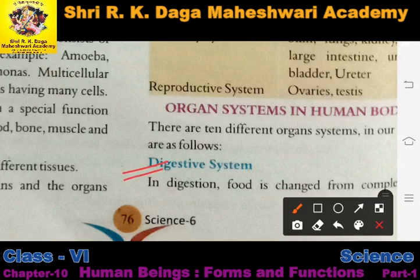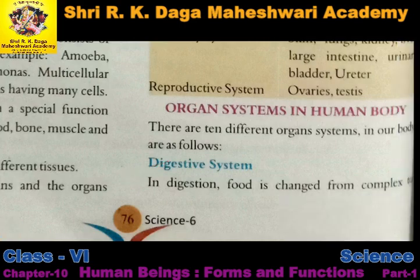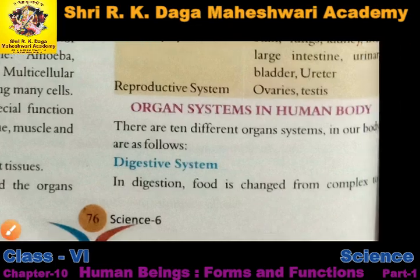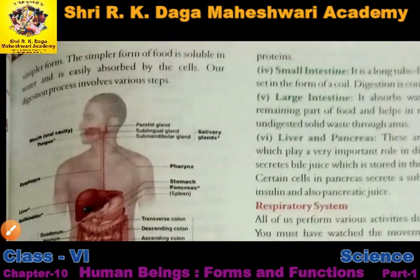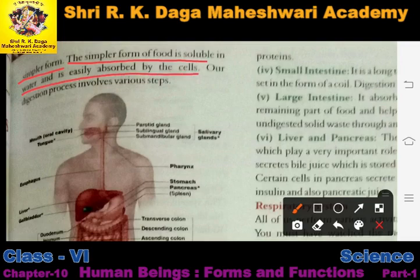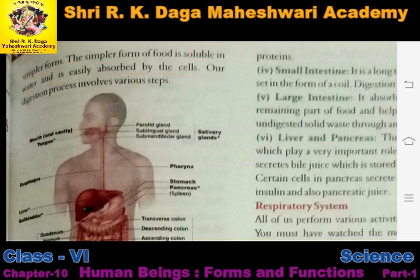The first one is the digestive system. In digestion, food is changed from complex to simpler form. The digestive system converts our complex food into simpler form. The simpler form of food is soluble in water and is easily absorbed by the cells, releasing energy that cells can absorb. Our digestion process involves various steps.